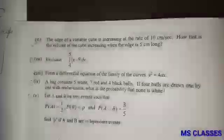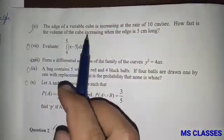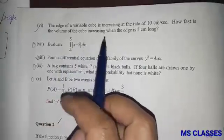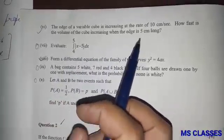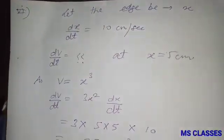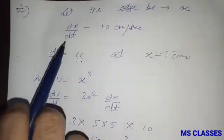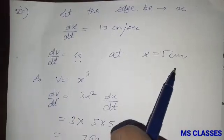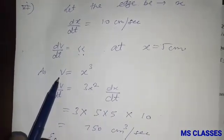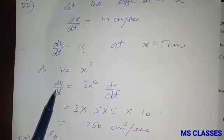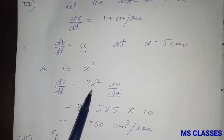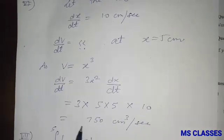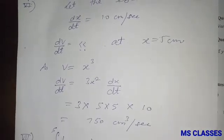Sixth part: the edge of a variable cube is increasing at the rate of 10 centimeters per second. How fast is the volume of the cube increasing when the edge is 5 centimeters long? Let the edge be x, so dx by dt is 10 centimeters per second. We have to find dv by dt at x equals 5. Since volume of a cube is x cube, dv by dt is 3x squared dx by dt. At x equals 5 and dx by dt equals 10, we get 750 centimeter cube per second.